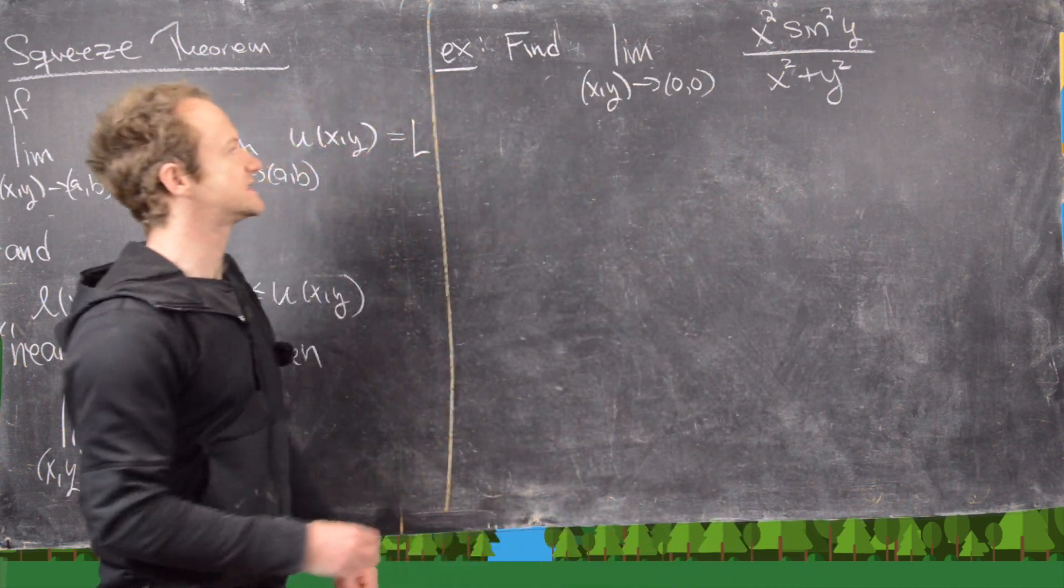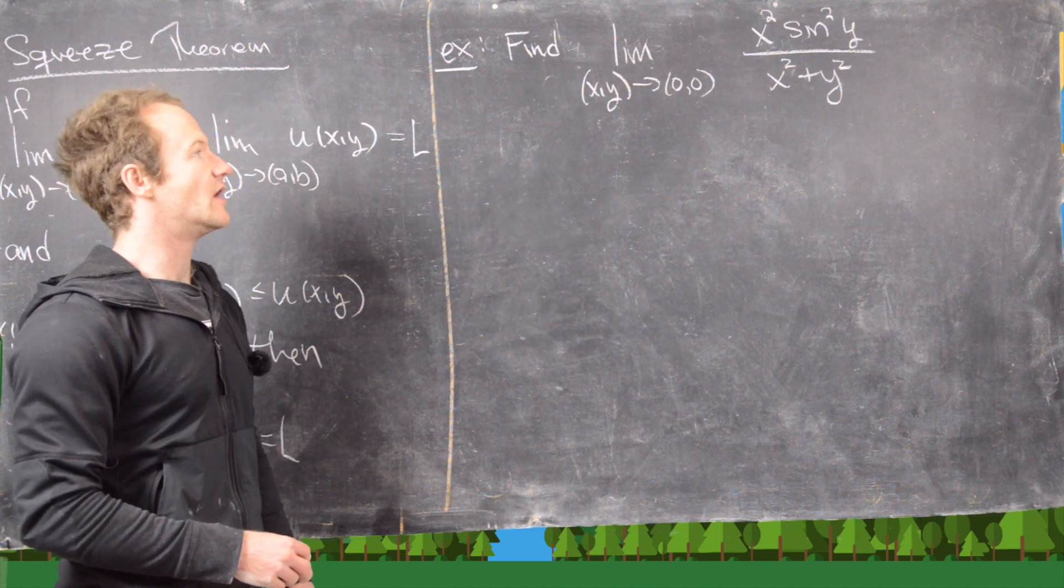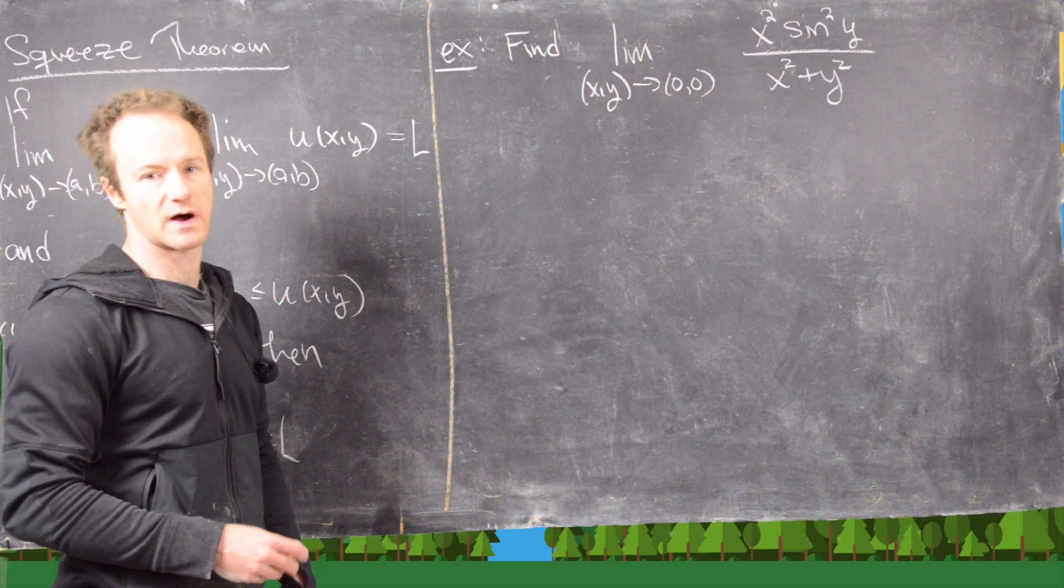Okay, so we're going to use this to calculate the following limit. We want the limit as xy approaches the origin of x squared sine squared y over x squared plus y squared.